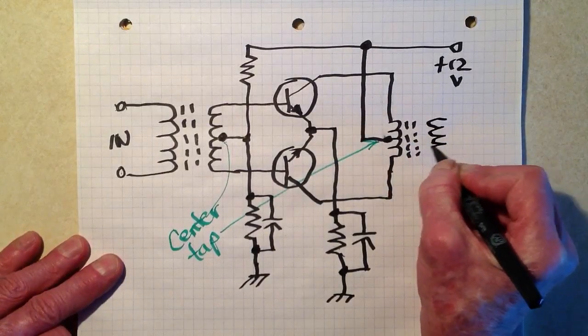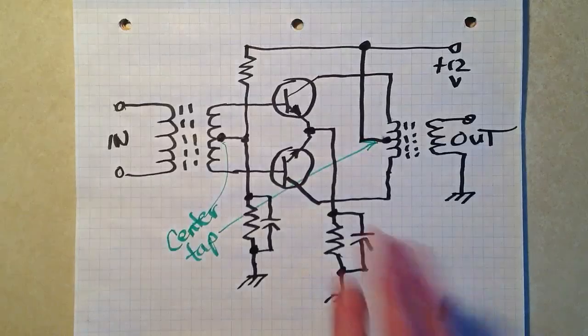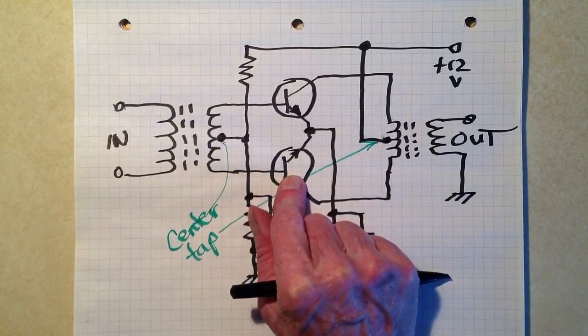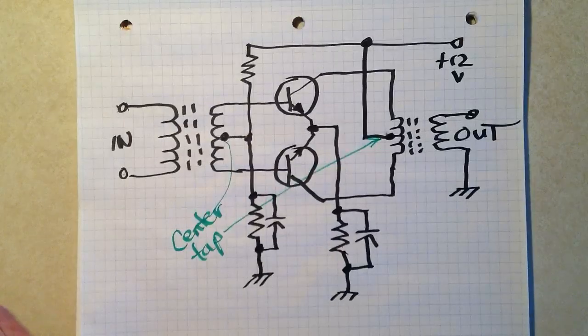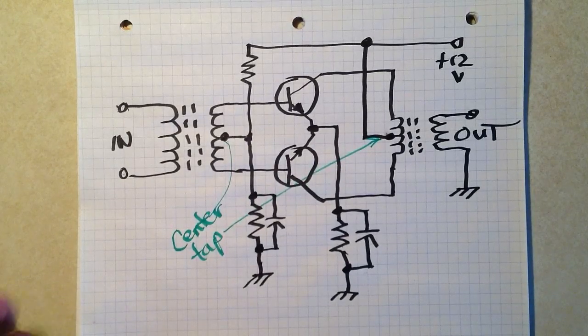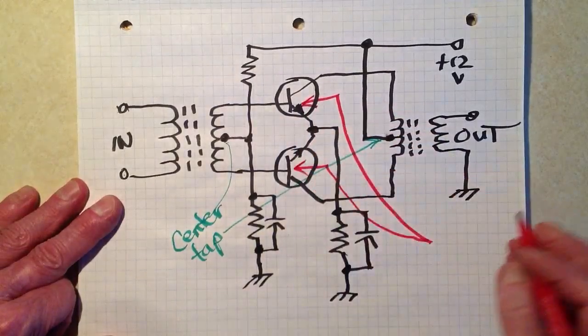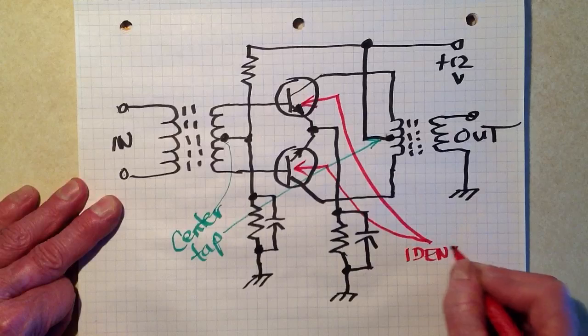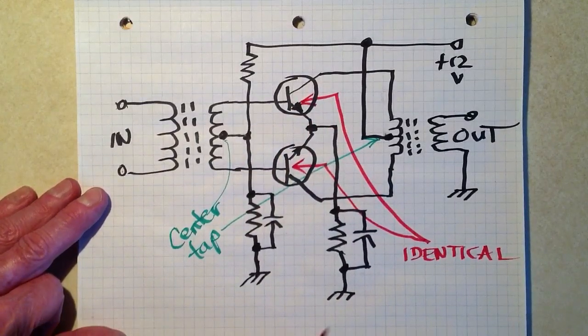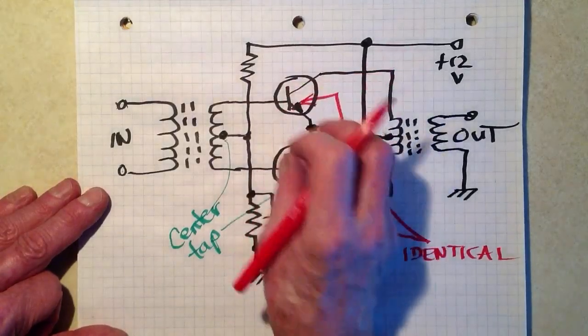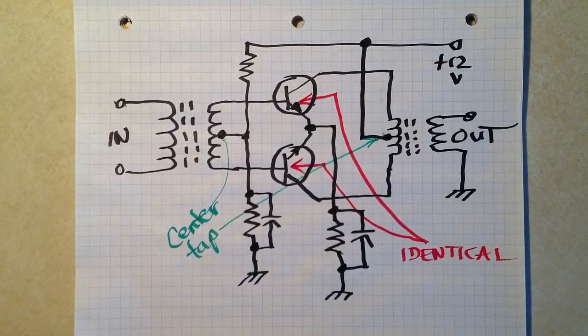Then you simply take the output from the secondary of this transformer. Now these two transistors are NPN bipolar transistors in this example. They could be PNP and then you would just reverse the polarity of the power supply. But the important thing, the crucial thing for a circuit like this to work properly, is that these two transistors here must be identical. Identical part numbers, and even when you match the part numbers, it's best to conduct experiments and make sure the characteristic curves of these two transistors are as nearly identical as possible.